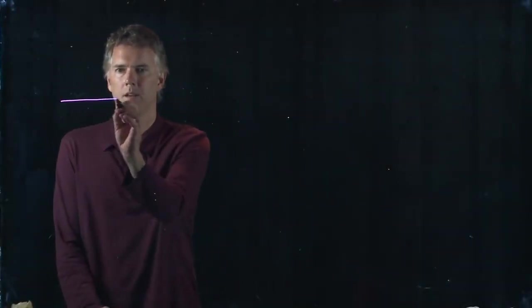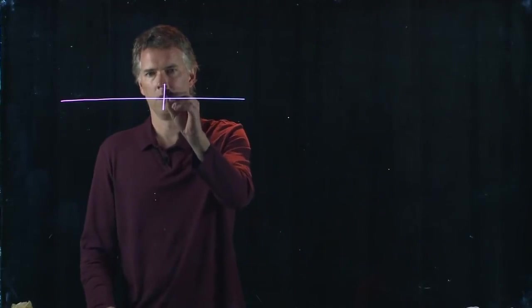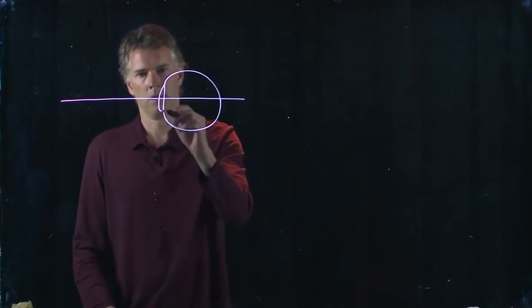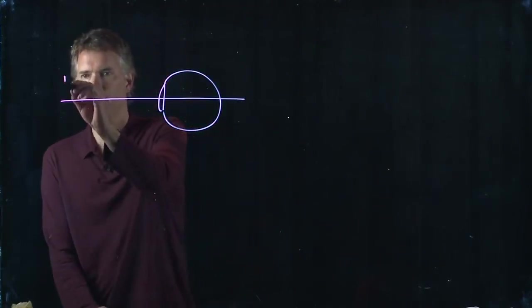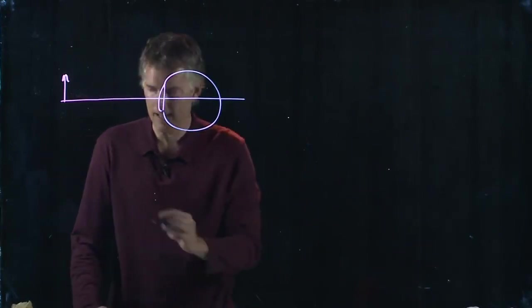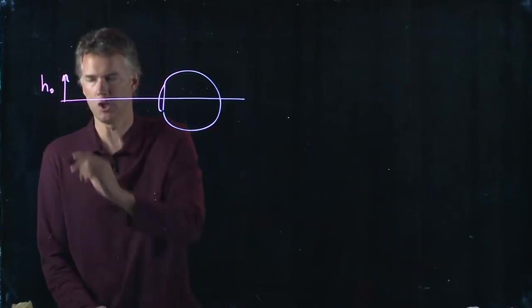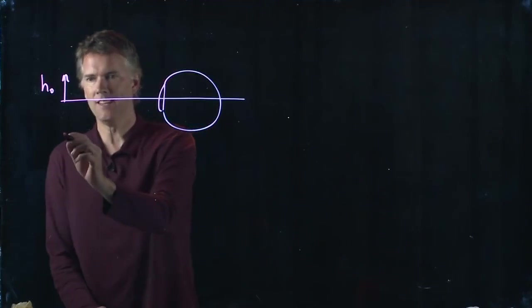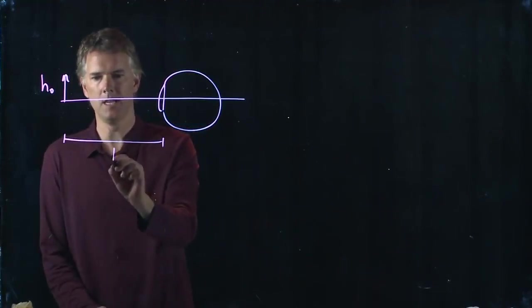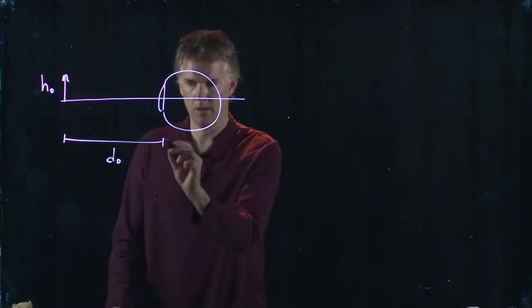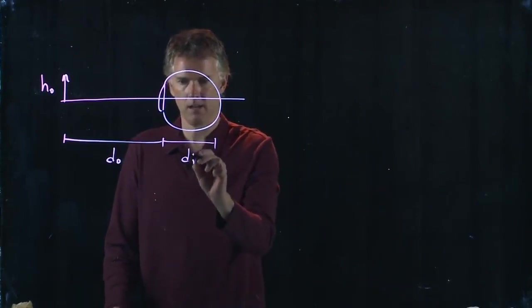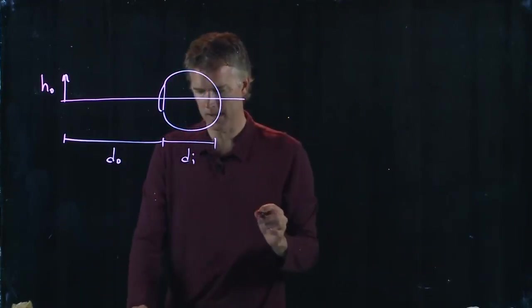So let's draw the picture again. There's our eyeball, we have an object out here, it has a height h_o, it is at a distance d_o from the eyeball. D_i is the distance to the back of the retina.